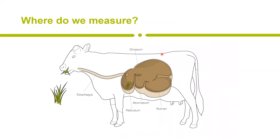Where do we measure? The gastric area of a cow is divided into four parts: the omasum, the rumen, the abomasum, and the reticulum. The reticulum is where we are situated. The sensor is put into the cow and stays at the reticulum for basically a cow's lifetime.